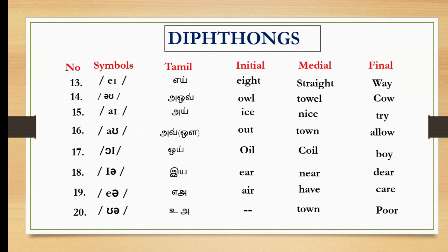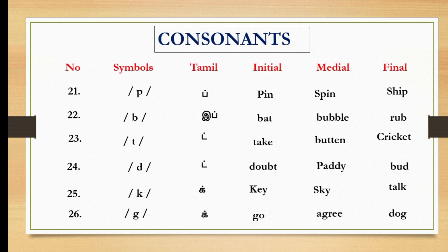Nineteen, ear, as in air, have, care. Twenteenth, ua, as in town, poor. Okay friends, we finished vowel sounds. Next, we are going to see about consonants. There are twenty-four consonant sounds in English phonetics. Let's see it one by one.